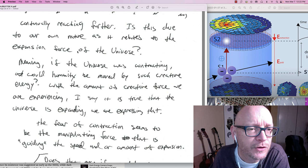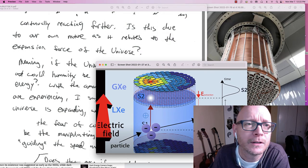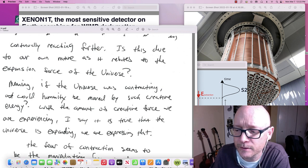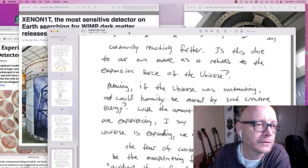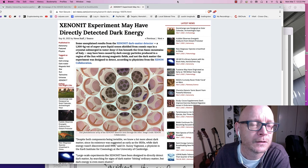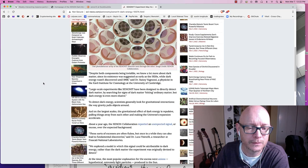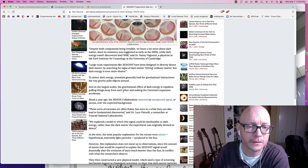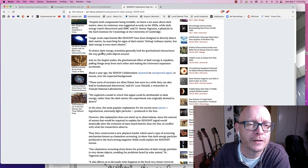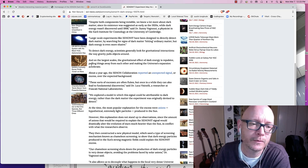And actually let me. I forgot that I wrote that. Because. To detect dark energy scientists generally look for gravitational interactions. The way gravity pulls objects around. And on the largest scales. The gravitational. Dark energy is repulsive. Pulling away from and making the universes expansion accelerate.